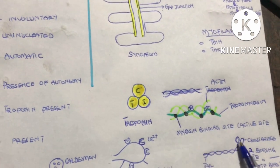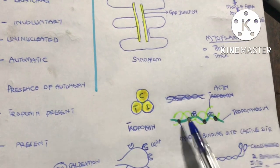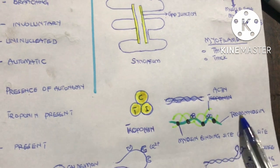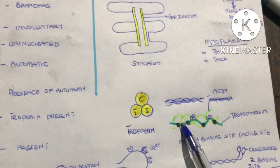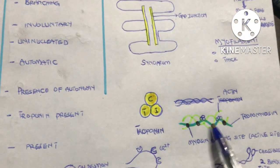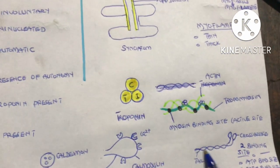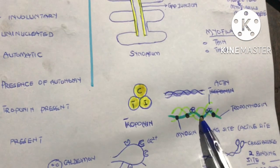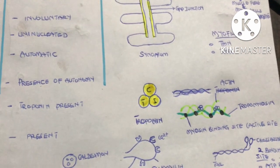When troponin undergoes a conformational change, it causes tropomyosin to also undergo a conformational change, exposing the myosin binding sites so that the myosin head — the cross bridge — can bind to actin and cause the sliding effect, which leads to contraction.